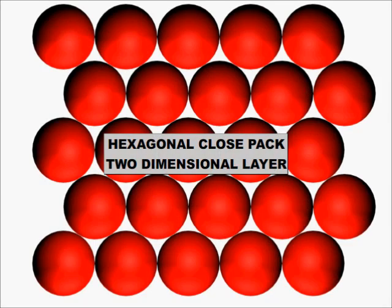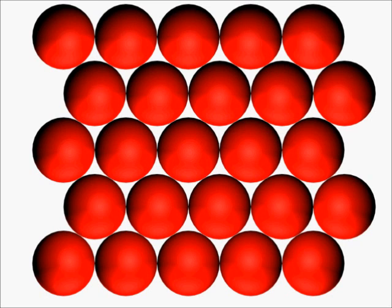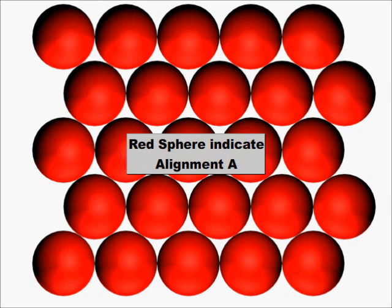Taking hexagonal close packing two-dimensional layer. The first layer contains red colored spheres indicating the alignment of the layer. This alignment is called A.